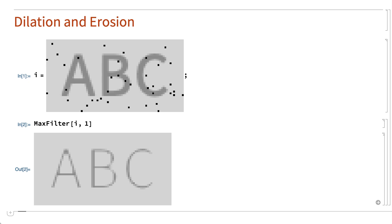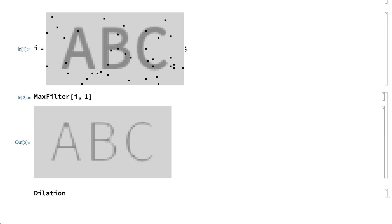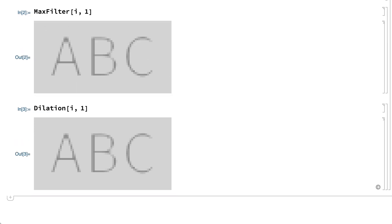Since the pixel value for a black pixel is zero, this has the effect of replacing all of the black pixels. For grayscale images, the maximum filter is a special case of a basic morphological operation called dilation.